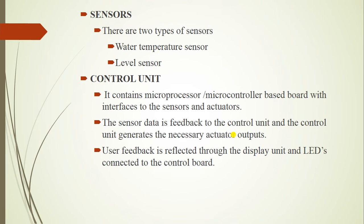Next, we are going to see the control unit. The control unit has a microprocessor or microcontroller-based board, and it interfaces to sensors and actuators. It gets feedback from the sensor data and provides the required output to the actuator. Both sensors and actuator are interfaced to the control unit — the microprocessor or microcontroller. Based on the sensor feedback, it provides control operations to the actuator. User feedback is visible through the display and LEDs connected to the control board.